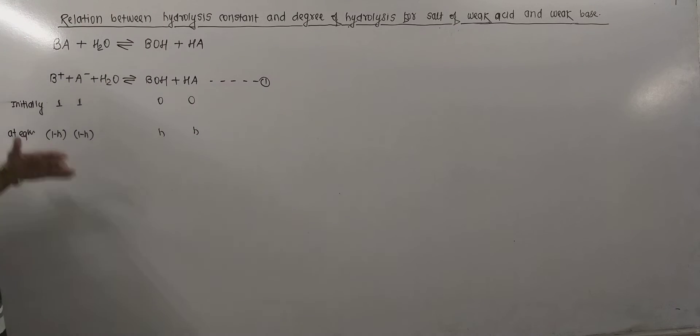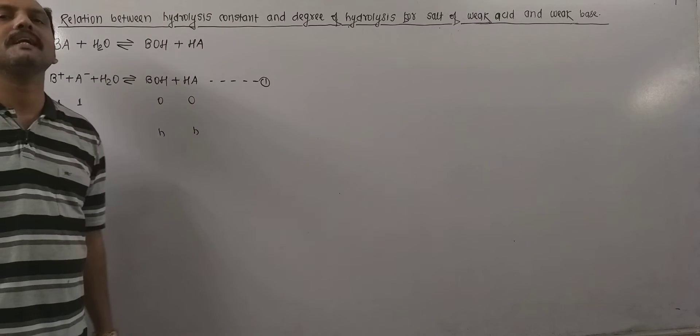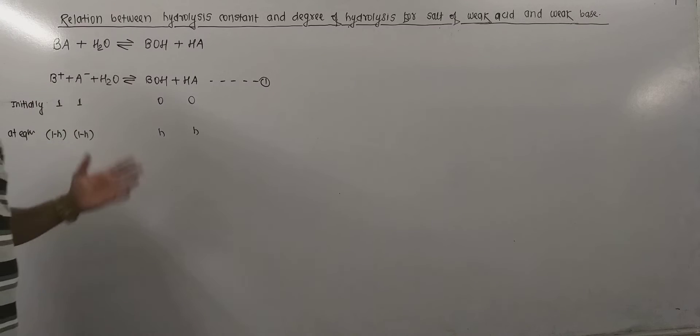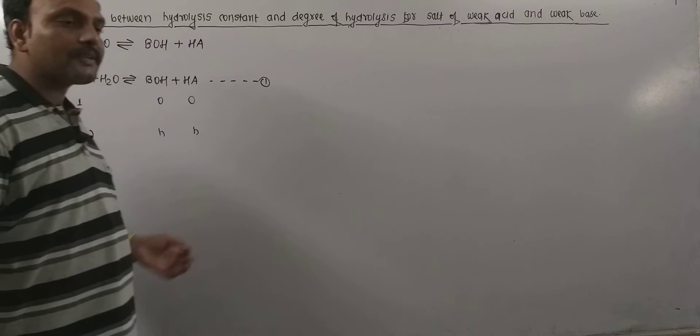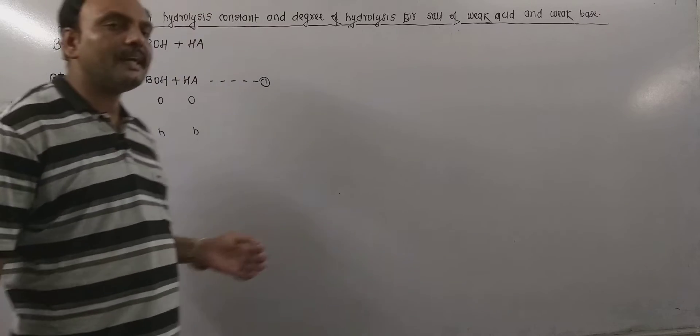Now consider 1 mole of salt BA of weak acid and weak base dissolved in V liter of water. So it gives the following type of reaction. We know very well that salt is of weak acid and weak base.